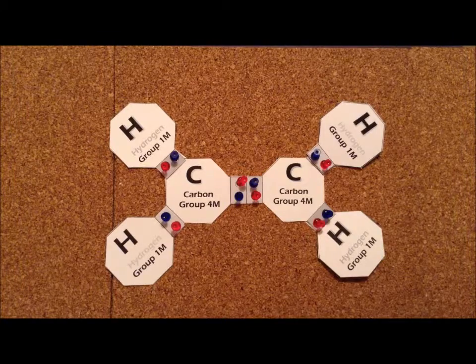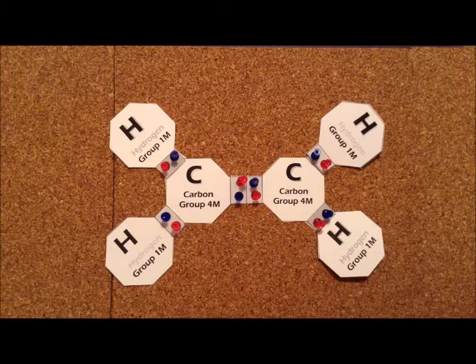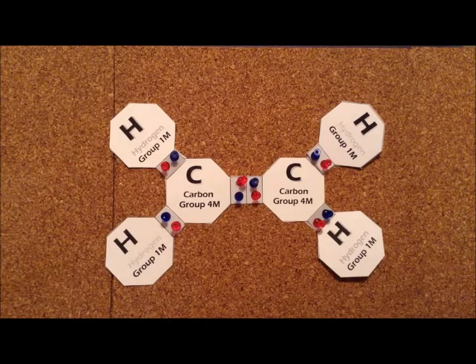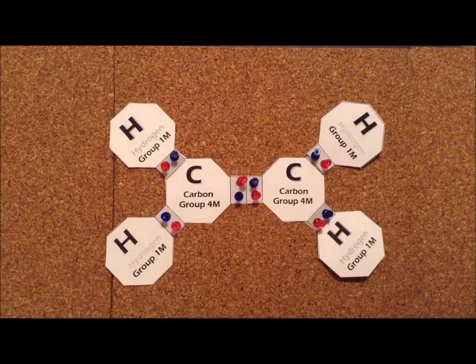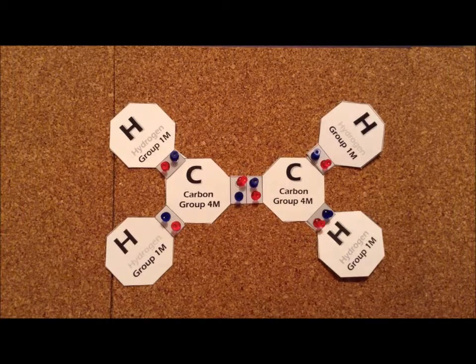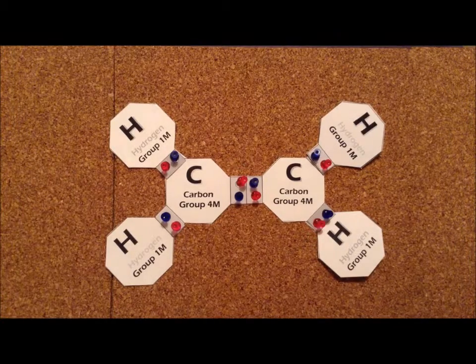This particular system has a total of, so we have two carbons, that's eight, four hydrogens is four more, so we have a total of 12 electrons in this system. And this shows the Lewis structure for that particular compound.